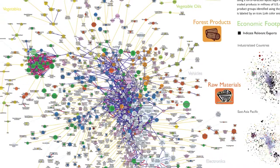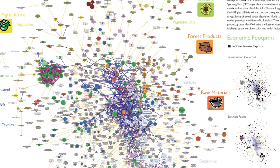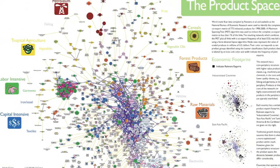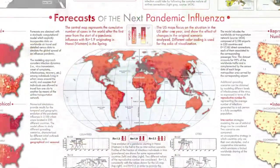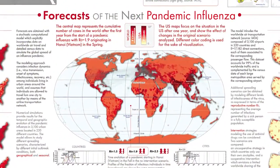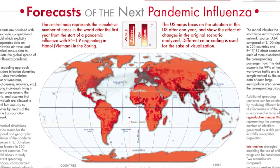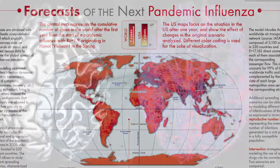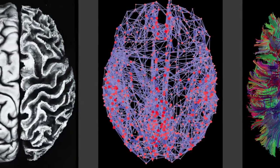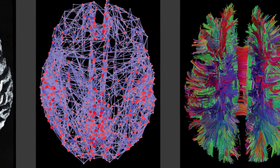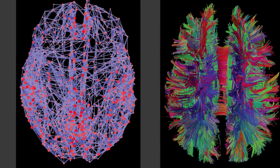Networks are all around us. We have social networks, we have brain networks, we have epidemiology diffusion networks, we have economic networks that we are a part of, and the Cyber Infrastructure for Network Science Centre is developing tools that help us all to read these networks, to analyse them and to visualise them.